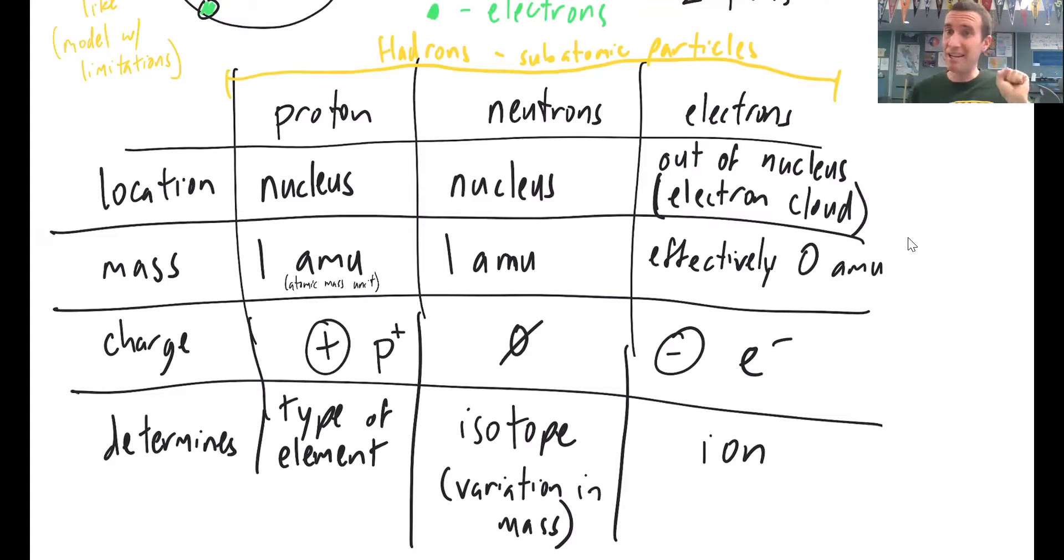And then they reappear somewhere else. Most things that we know about don't do that, but that's the model that works for electrons. So electrons are outside the nucleus, they're in this larger electron cloud.